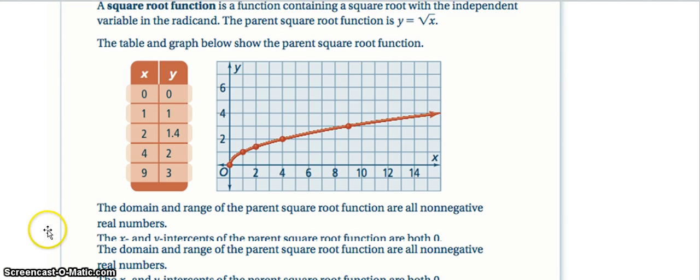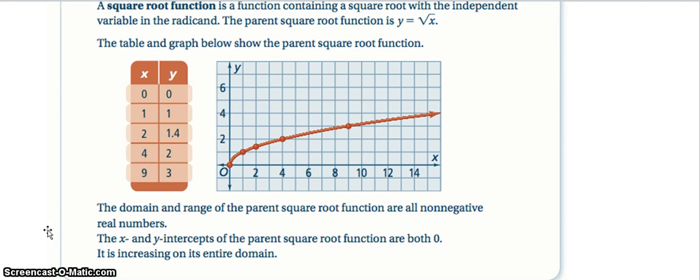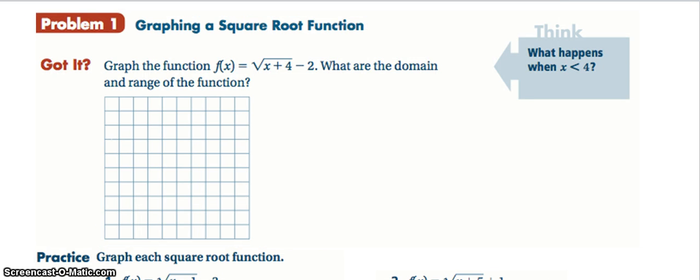So then work through the Pearson module until you get to the got it for part one. The big thing to learn here is what the change is affected by the values inside the radical and the values outside the radical.